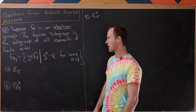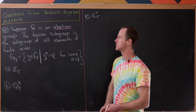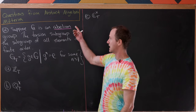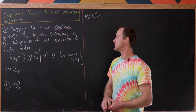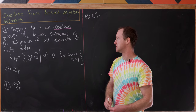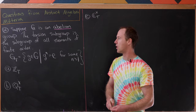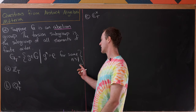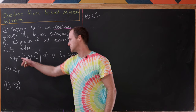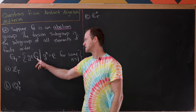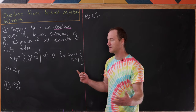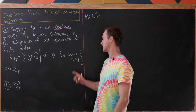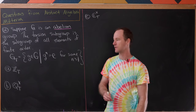For our next problem, we're going to look at something called the torsion subgroup of an abelian group. If we've got an abelian group G, the torsion subgroup of G is the subgroup of all elements of finite order. We could write it symbolically as: G_T is all elements g of G such that g to the n equals the identity for some n ≥ 1.